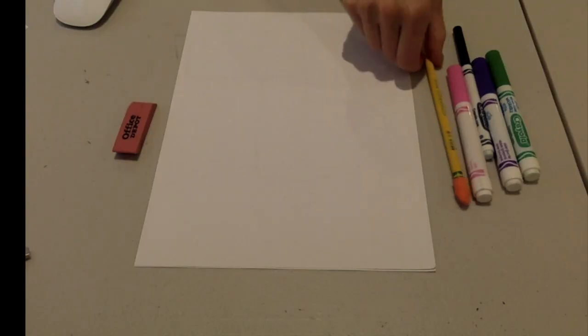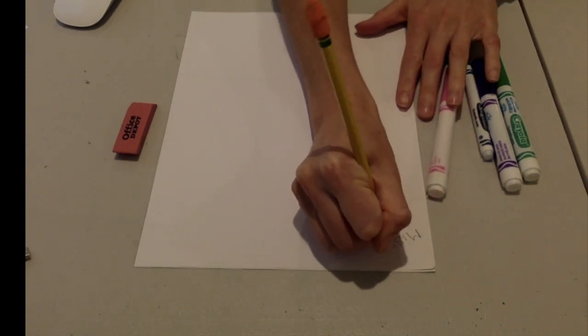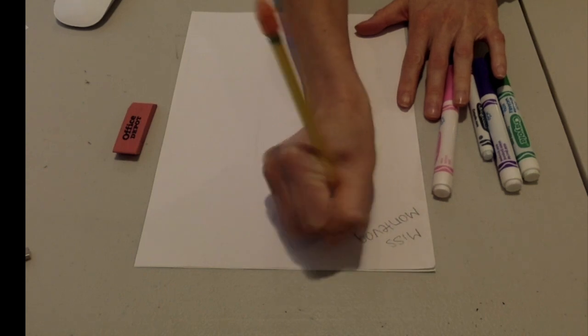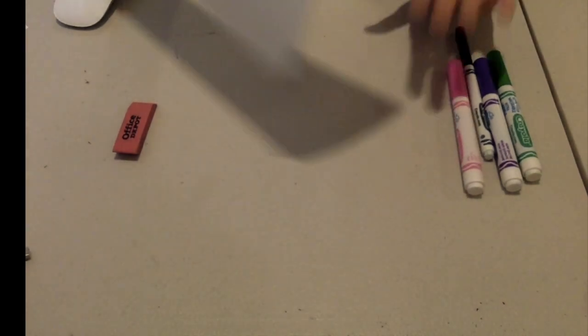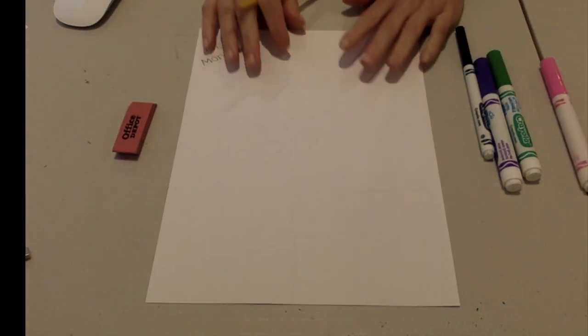Let's get started. The first thing, you guessed it, put your name on your paper. Make sure that your paper is set up in portrait, not landscape. I'm going to go ahead and flip it over and draw upside down so you can see a little bit better.